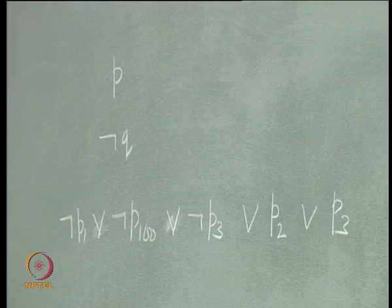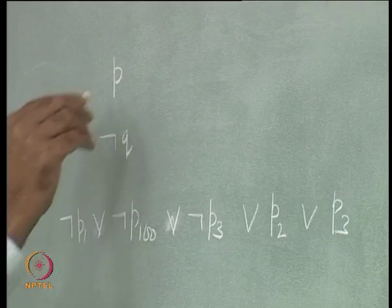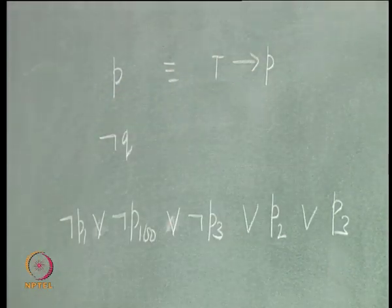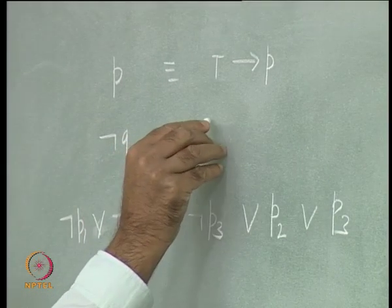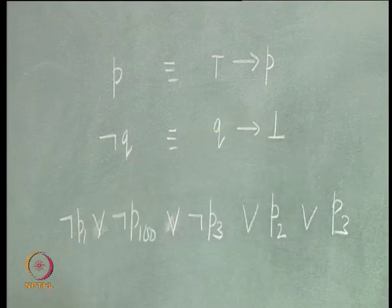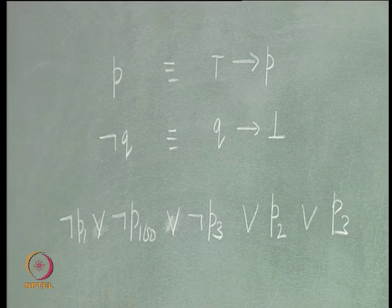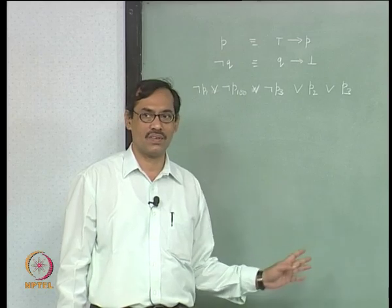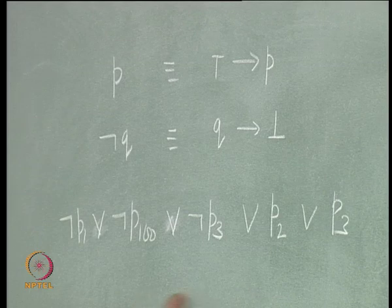Usually, we do not represent HORN formulas in this form, because there is a more suggestive way of writing them. For example, P can be written as ⊤ → P. And not Q can be written as Q → ⊥. That means we are using top and bottom symbols here, though we do not use them in the usual CNFs. We have to define a HORN clause in a way that top and bottom are also included. But then we will stick to this implication form instead of the disjunctive form.